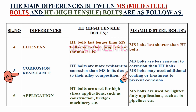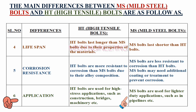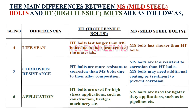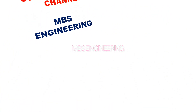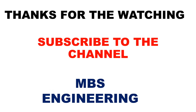MS bolts may need additional coating or treatment to prevent corrosion. Sixth point: we will consider the application. HT bolts are used for high stress applications such as construction, bridges, machinery, and other applications. MS bolts are used for lighter duty applications such as in pipelines and other applications. We hope this explanation clarifies the difference between HT (high tensile) and MS (mild steel) bolts. Don't forget to subscribe to our MBS engineering channel for more informative videos.